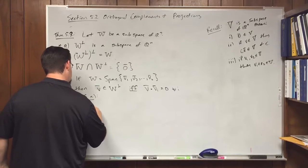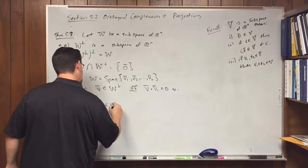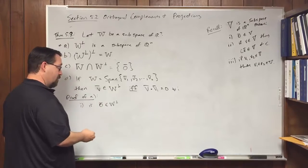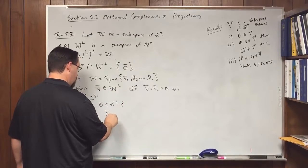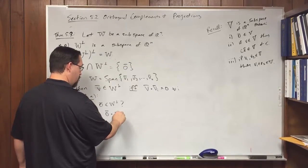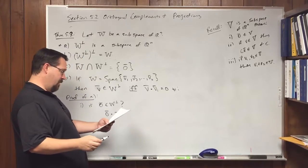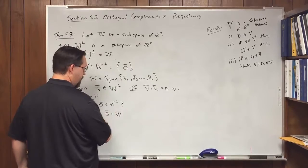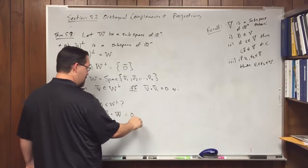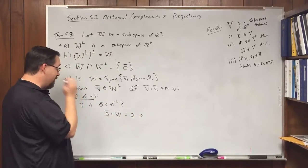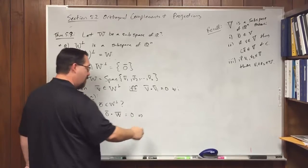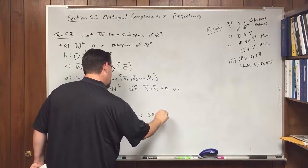First, is zero an element of the orthogonal complement of W? Take zero dotted with any vector W out of the space W. No matter what W is, that's always zero, which is exactly the definition of being in the orthogonal complement. So zero is an element of W perp.